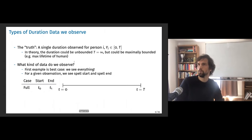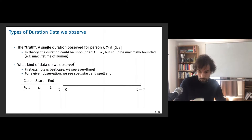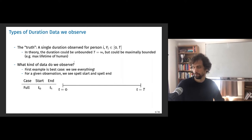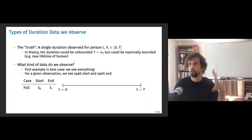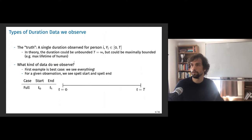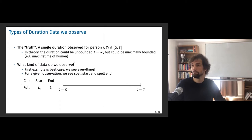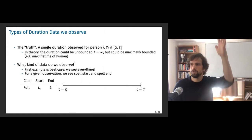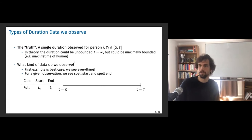The types of duration data you observe are potentially going to vary a lot, and this plays a big role in why duration data matters so much. If we were God and saw everything, the truth would be: for every person i we observe a duration between zero and some positive maximal value — possibly unbounded. The first example is the best-case scenario where we see everything — when the spell starts and when it ends, from period zero all the way to cap T. We can call this the full case.